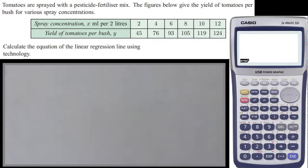Tomatoes are sprayed with a pesticide-fertilizer mix. The figures below give the yield of tomatoes per bush for various spray concentrations.